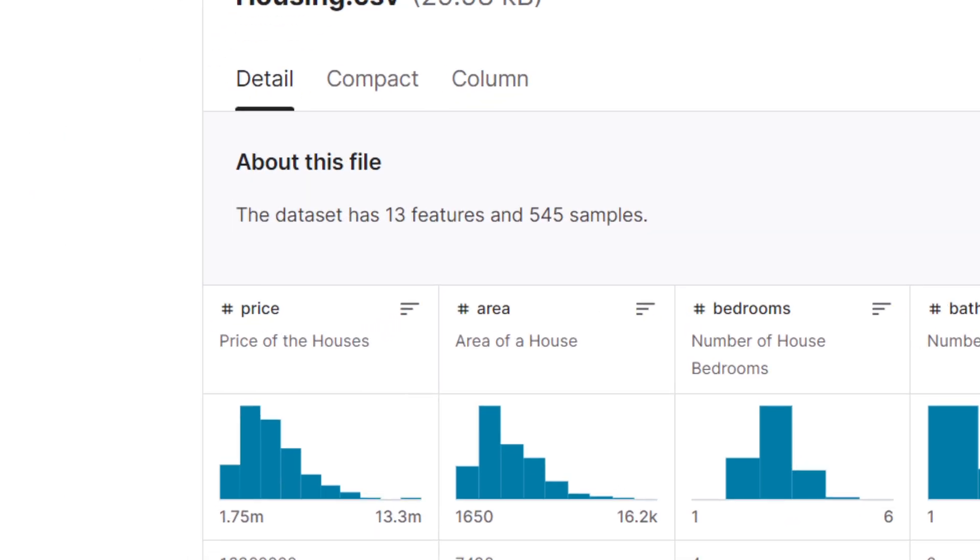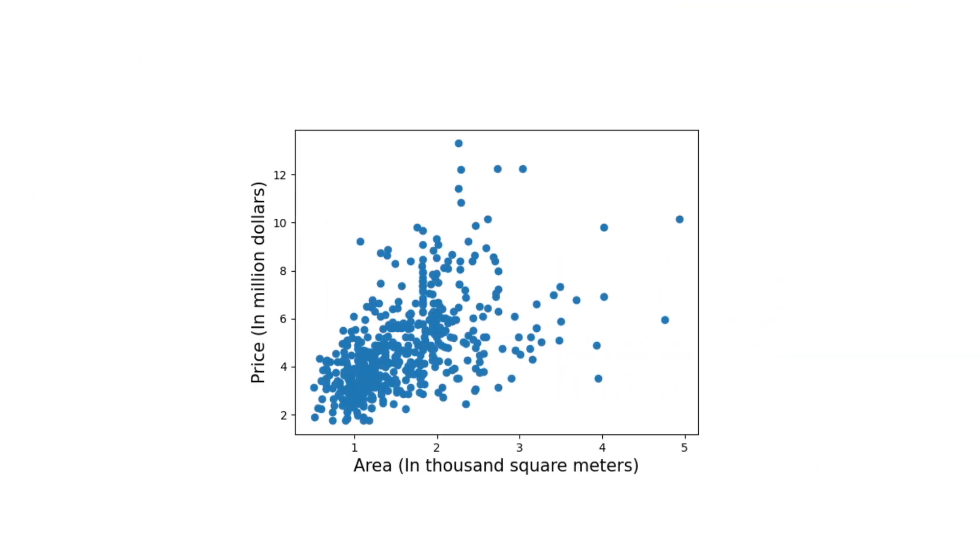It has 545 observations. From the plot, it is easy to approximate the relationship of the variables, which is probably linear. Let's run the optimization model.